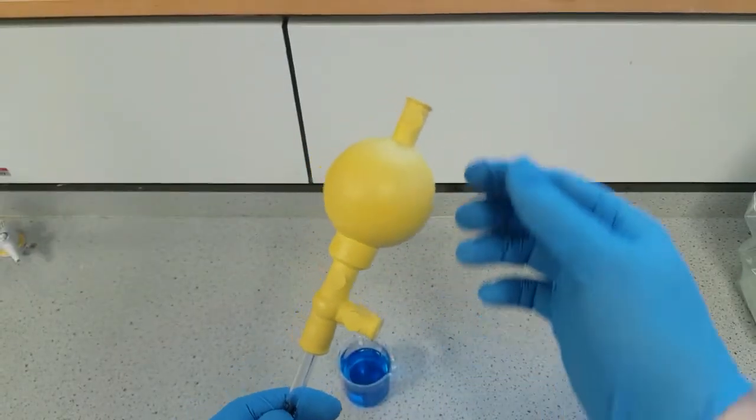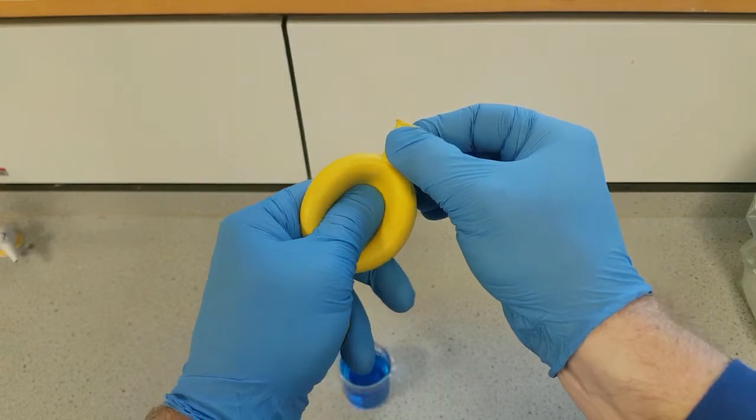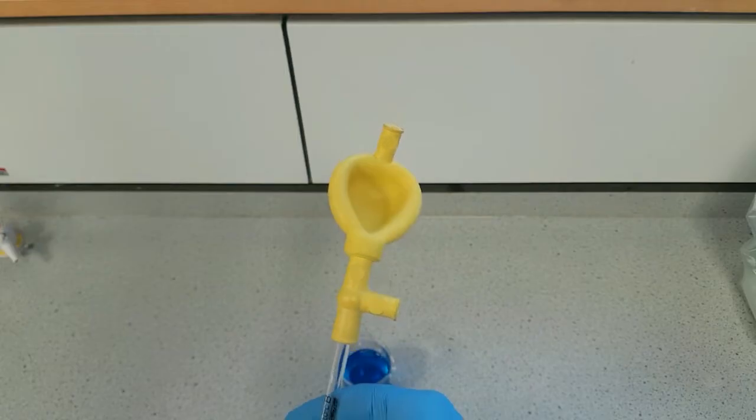To draw up liquid into our pipette, first of all we press the A valve and then press the bulb. Let go of the A valve and then let go of the bulb. That should let all the air out of the bulb.